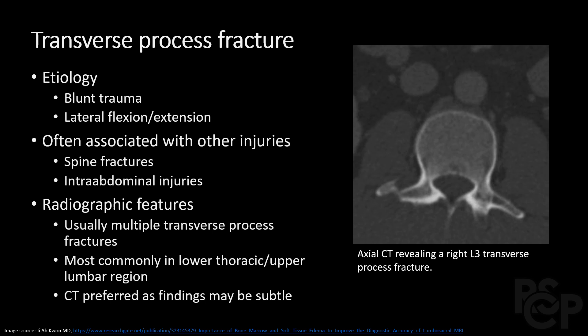The transverse processes are the two processes that protrude laterally at the posterior portion of the vertebrae, and the spinous process is the posteriorly protruding portion. Fractures of the transverse process are commonly due to trauma and lateral flexion or extension, in which the distal end of the process pulls away. These are associated with other injuries even though the fractures themselves are often minor. Given the mechanism, there are often multiple transverse process fractures occurring lower in the back. CT is the preferred study for evaluating bony anatomy.